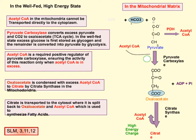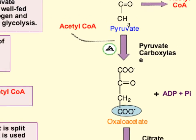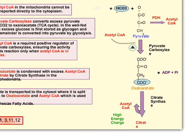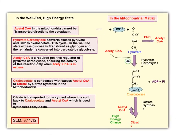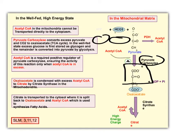Of the 14 NADPHs needed, eight of them come from the oxaloacetate pathway, and the other six come from the pentose phosphate shunt. In the well-fed state, with a high energy charge and high amounts of acetyl-CoA, high acetyl-CoA will actually activate pyruvate carboxylase. So pyruvate combines with bicarbonate and ATP, and pyruvate carboxylase converts it into oxaloacetate.